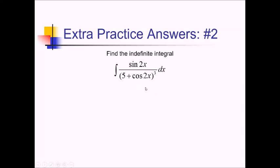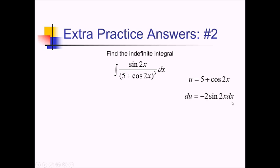For this problem, trying to take this anti-derivative, there isn't really a good way to simplify this to make it easier. Since I noticed that I have an inner function — this cosine of 2x function — and its derivative, sine of 2x, in the same problem, I'm going to try substitution. Let's let u equal this 5 plus cosine of 2x part. At some point, I'd like to call this u to the third power in the denominator. Taking the derivative: du equals negative 2 sine of 2x dx, so dx equals du over negative 2 sine of 2x.